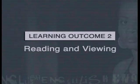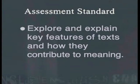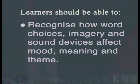The following lesson is linked to Learning Outcome 2, Reading and Viewing. It addresses the assessment standard that requires learners to explore and explain key features of texts and how they contribute to meaning. Learners should be able to recognise how word choices, imagery and sound devices affect mood, meaning and theme.